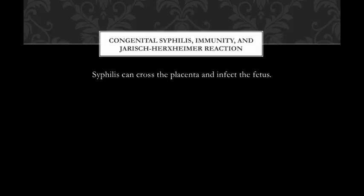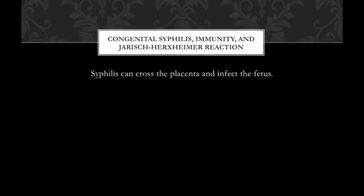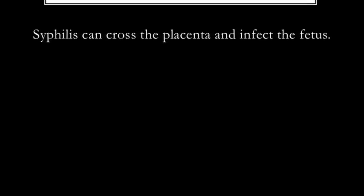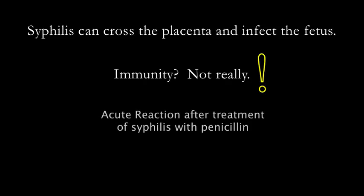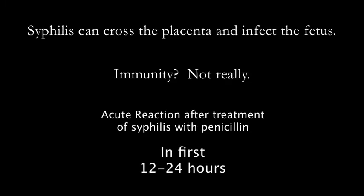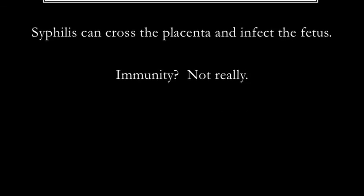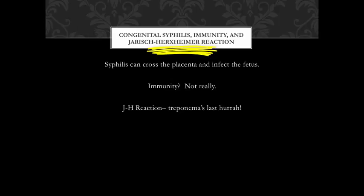Three high-yield points: First, syphilis can cross the placenta and infect the fetus. Second, there is some evidence of partial immunity from prior infection, but reinfection with a different Treponema strain is very possible if exposed. Third, patients treated with penicillin may experience fever, chills, myalgia, headache, tachycardia, tachypnea, and leukocytosis within the first 12 to 24 hours — because Treponema die quickly when exposed to penicillin and their lipoproteins are released into the serum, causing a systemic cytokine response. Symptoms are usually mild, lasting less than 24 hours, and management is symptomatic. This is the Jarisch-Herxheimer reaction.